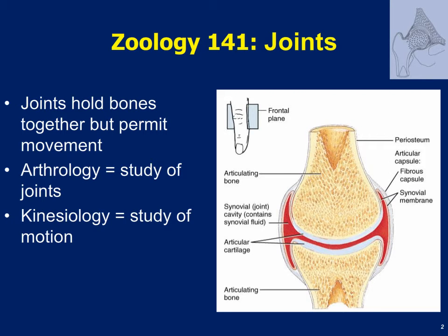Today we're starting on our second lecture of joints. Last time we talked about joint mobility, different types of joints, as well as the different types of joint movements permitted. Today we're going to focus mainly on the joints of the elbow, the shoulder, and also the hip. All of these are synovial joints. We're also going to spend some time talking about joint diseases and joint disorders.